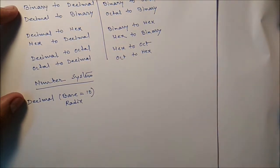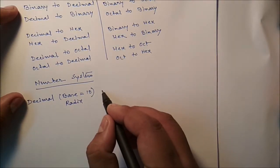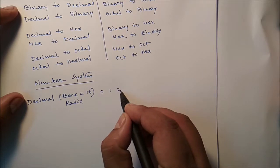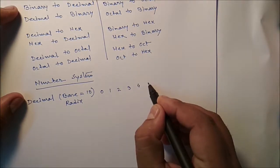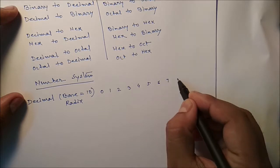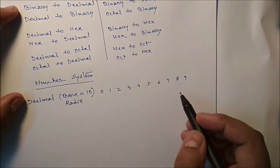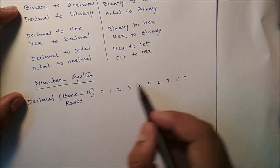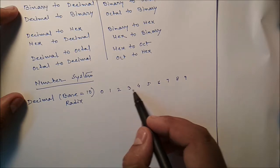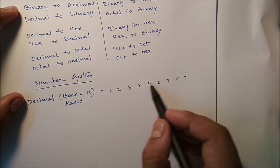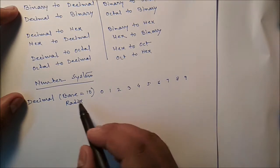Now, how it is 10? Suppose starting from 0, 1, 2, 3, 4, 5, 6, 7, 8, 9. So after 9, total number of distinct symbols is 1, 2, 3, 4, 5, 6, 7, 8, 9, 10. So 10 distinct symbols are there, that's what is base 10.